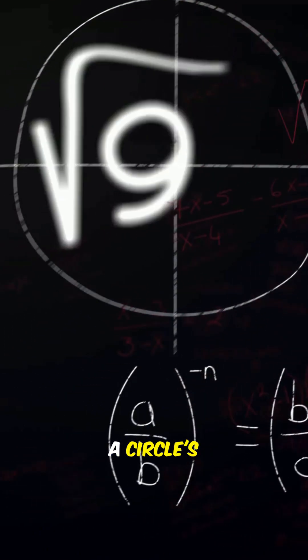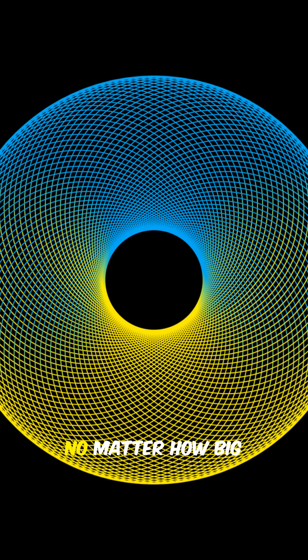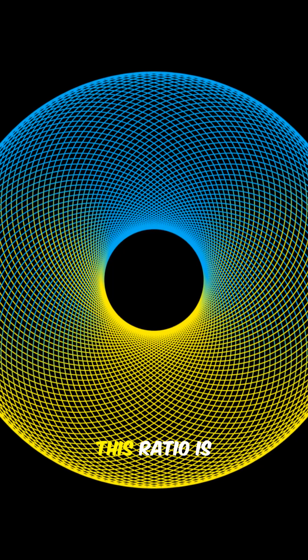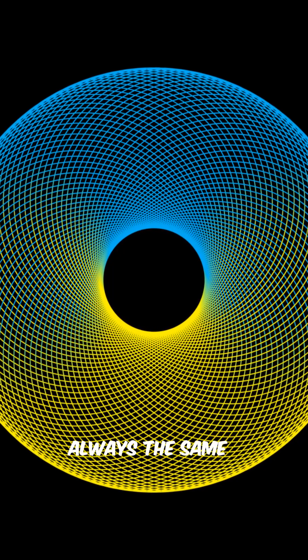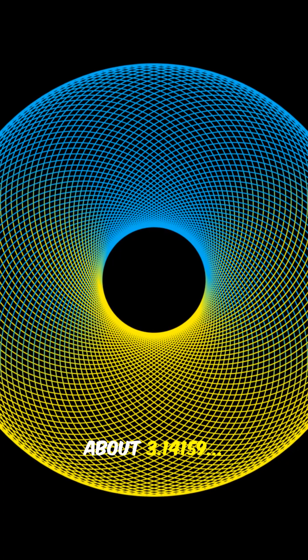Pi is the ratio of a circle's circumference to its diameter. No matter how big or small the circle, this ratio is always the same. About 3.14159.